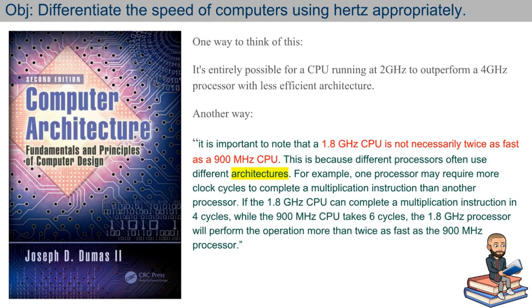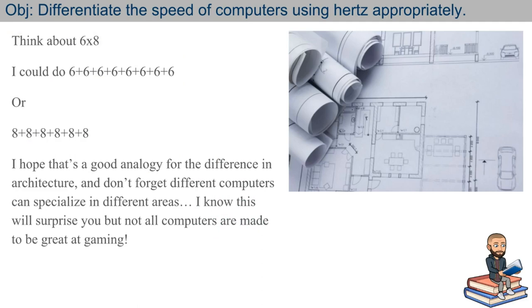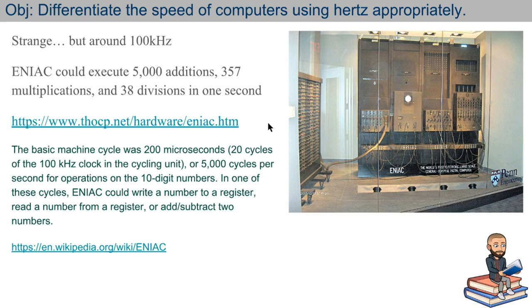And let me leave you with this thought, that at the end of the day, it's all about architecture. It's possible for a CPU running at 2 GHz to outperform a 4 GHz processor with a less efficient architecture. And you can go the other way with that, too. You could have a 1.8 GHz CPU that is not twice as fast as a 700 MHz CPU. It could be more than twice as fast. Take a multiplication instruction, for example. If a 1.8 GHz CPU can do that multiplication in only four cycles, and the other CPU is using six cycles, well, this is now more than twice as fast as the 900 MHz processor. A good way to visualize this is maybe think about the way you could do six times eight. You could add up eight sixes, and that would take a certain amount of time. Or maybe faster, if you just added up six eights, you could get to the result faster. Think of these two as like a difference in architecture.